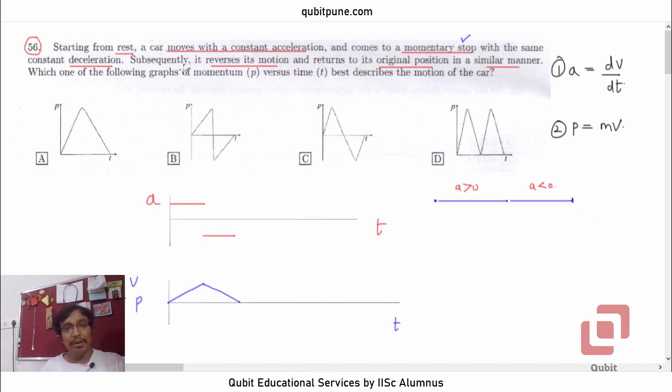Then they say subsequently it reverses its motion. Now it reverses its motion means the velocity has to be negative. And they are saying it returns to its original position in a similar manner. What does that mean? That means now, whatever may be the momentum's value, it will be negative. The momentum has to be negative.